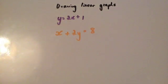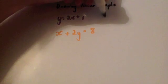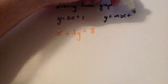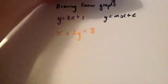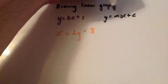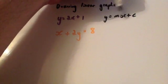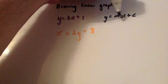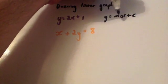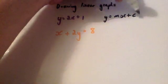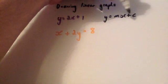When I say traditional format, the reason I say that is because a straight line graph quite often comes in the format y equals mx plus c. Watch the video on y equals mx plus c to find out a little bit more about m, which is the gradient, and c, which is the y-intercept.